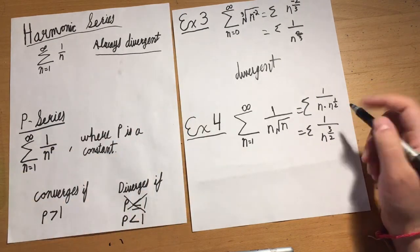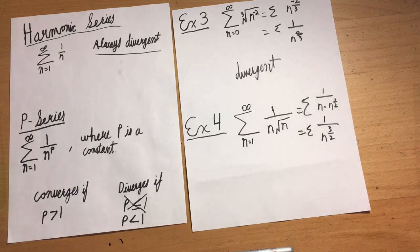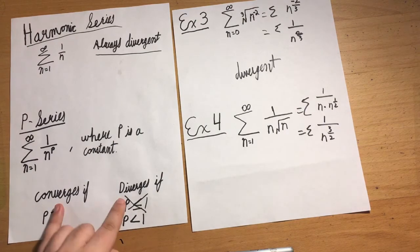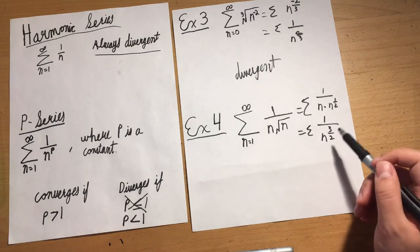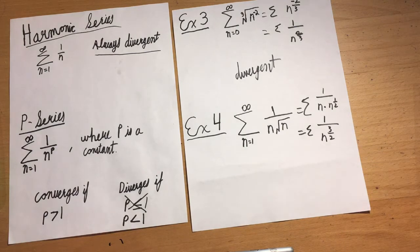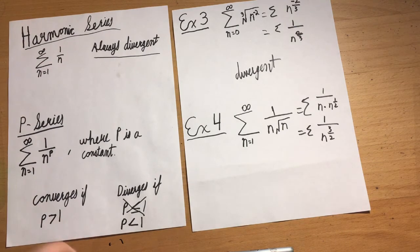Now I check my test. It's in the form that I want: 1/n to some exponent. It's a p-series, and the exponent is greater than 1, meaning it would have to converge.